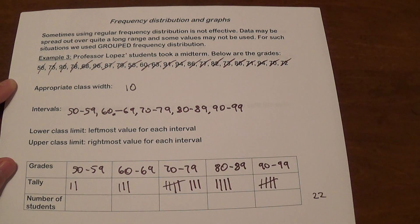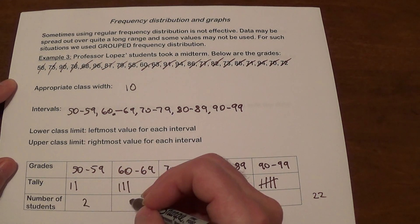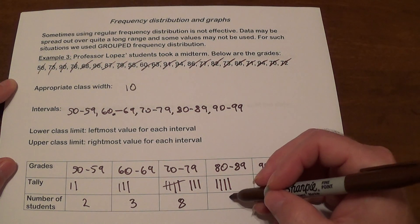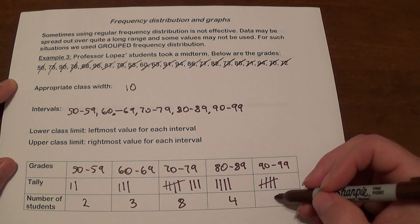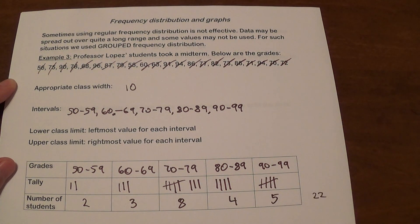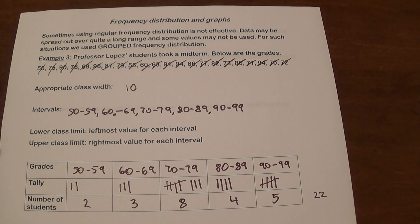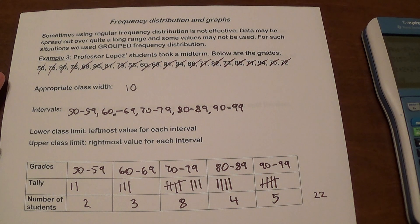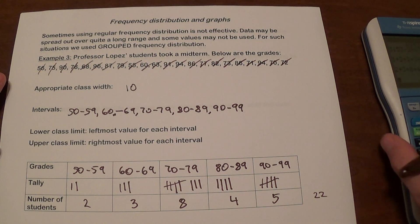So what do we have total? 2 here, 3 here, 8 here, 4 here, and 5 here. Does it all add up to 22? Let's check because we always want to make sure. 2 plus 3 plus 8 plus 4 plus 5 gives us 22. Perfect.